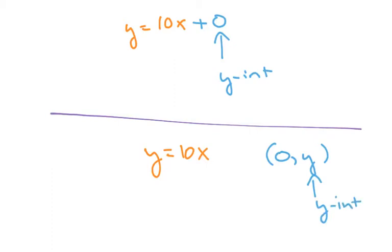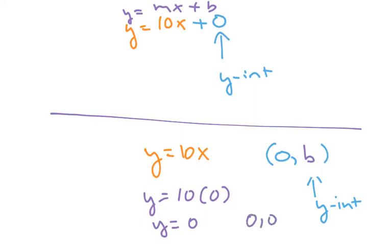We sometimes denote instead of calling it y, we'll sometimes even just call it b, part of that from above, y equals mx plus b. So if I make x 0, we have 10 times 0 equals y, so y equals 0. So the y-intercept in this technique is still 0. So the point would be 0, 0.